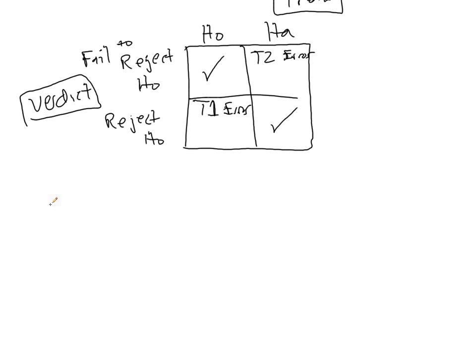We typically want to limit error. Now, we can't avoid it, because the only way to avoid it is by doing a census, in other words, sampling the entire population. Otherwise, there will always be sampling variability, or i.e., sampling error.